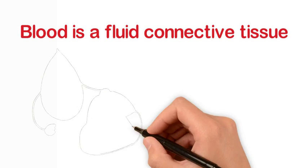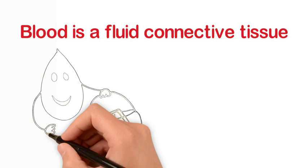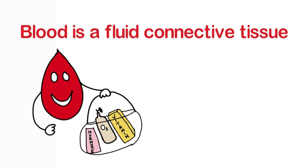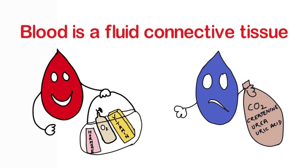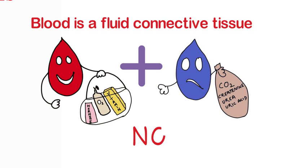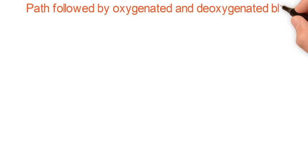Blood is a fluid connective tissue which helps to transport nutrients, hormones and respiratory gases to different parts of the body and removes unwanted substances. Blood follows a very clever path to keep essential substances separated from unwanted substances.